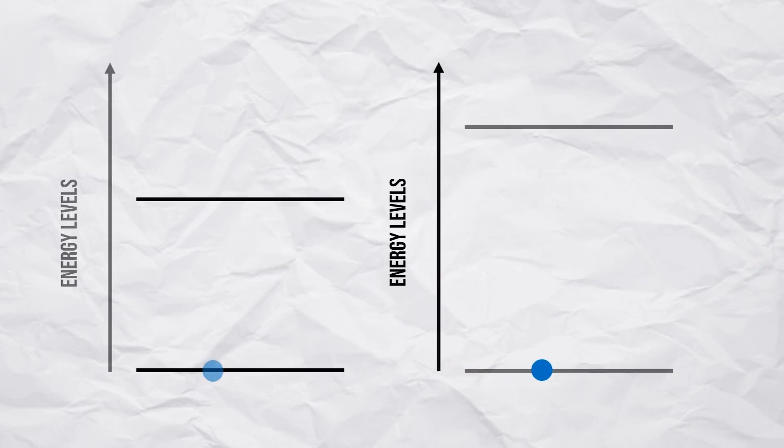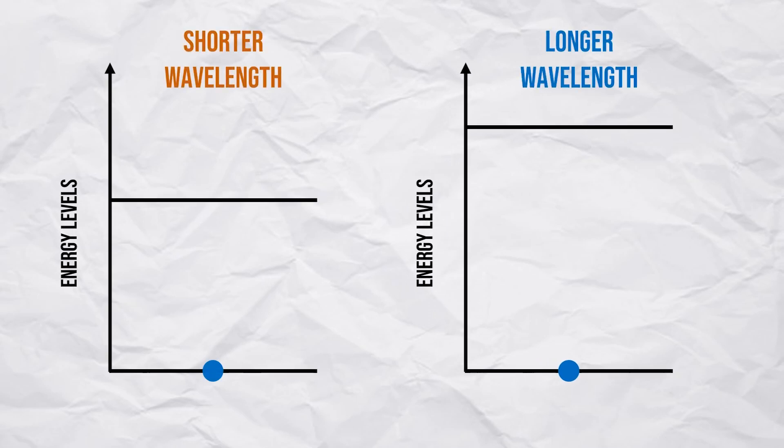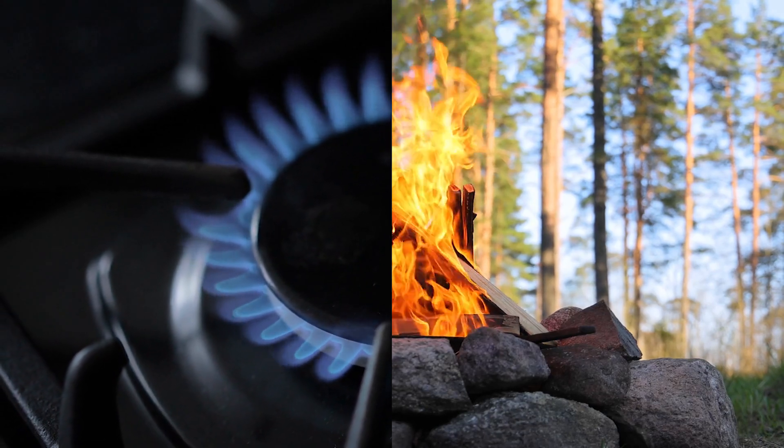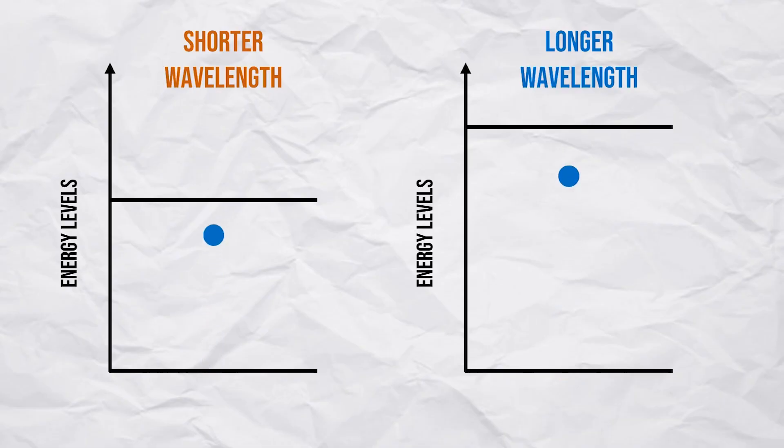The distance between the two energy levels is also related to the wavelength of light that is emitted. This is why some flames burn with different colours, because the atoms have different sized gaps between their energy levels, so different wavelengths, or colours, of light are produced.